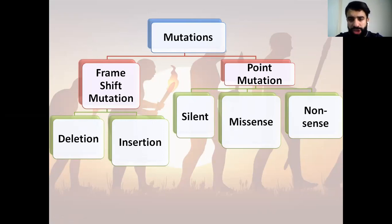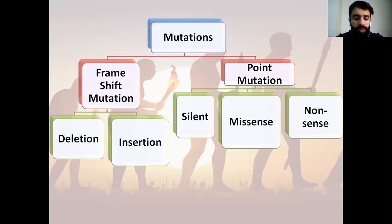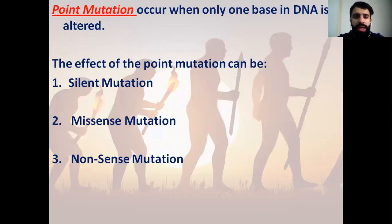Miss-sense mutation, or miss-sense point mutation, leads to the change in the amino acid sequence. And the non-sense mutation will lead to the appearance of something known as a stop codon. Miss-sense mutation occurs when only one base in the DNA is altered or changed.